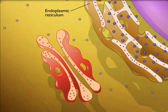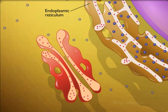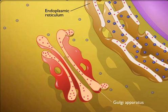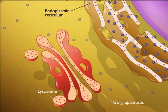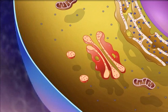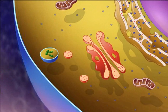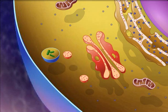These enzymes are then transported to the Golgi apparatus by transport vesicles. The lysosomes arise from the Golgi apparatus. When particles such as viruses or bacteria are ingested by phagocytosis, the lysosome fuses with the particle-containing vesicle, called a phagosome, and delivers the hydrolytic enzymes.